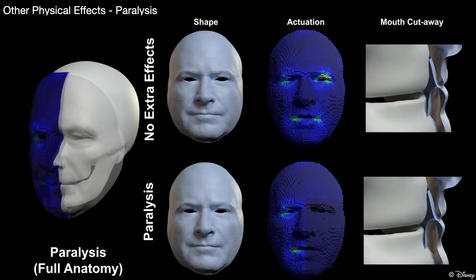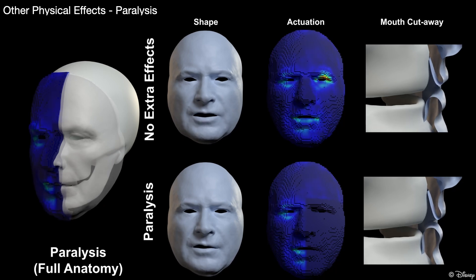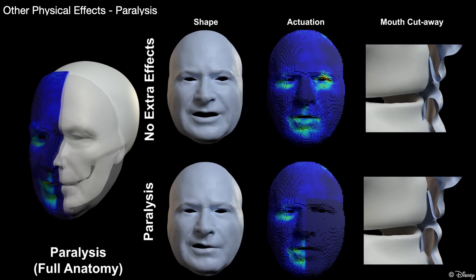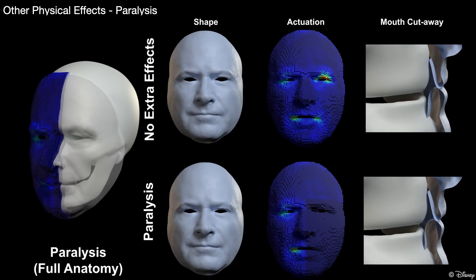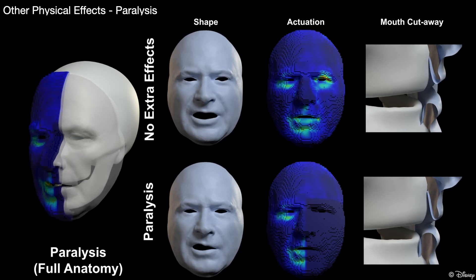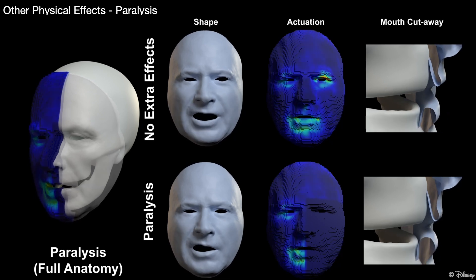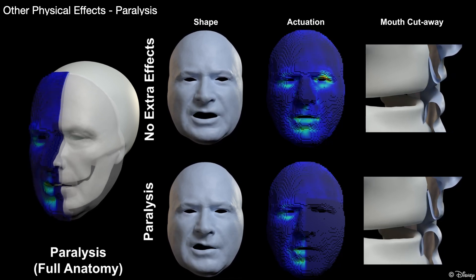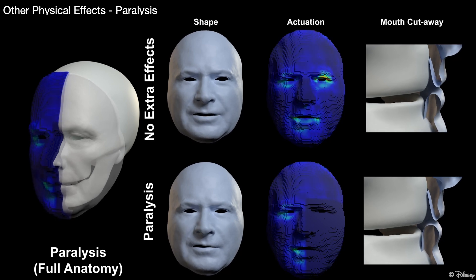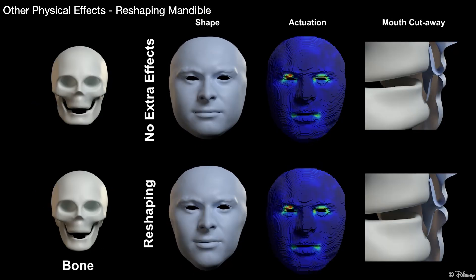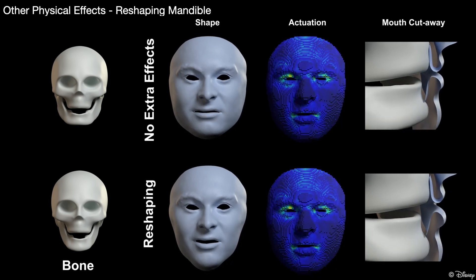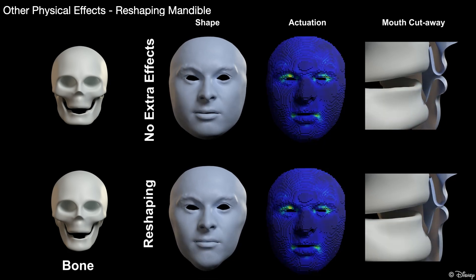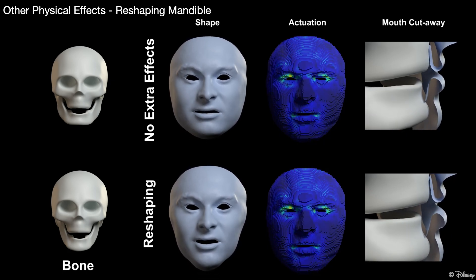Secondly, our model has the ability to simulate facial paralysis. The paralyzed section isn't completely rigid — it naturally deforms in response to movement from other parts of the face. For instance, the mandible movement influences the deformation of the paralyzed section. Finally, our model provides the capability to change the shape of the mandible, and any changes are naturally propagated to the skin of the face.